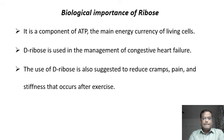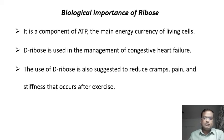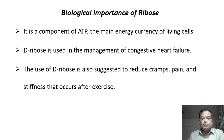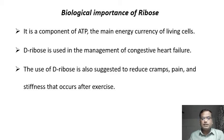D-ribose is used clinically in the management of congestive heart failure, and it is also used to reduce cramps, pain, and stiffness that occur after exercise. Simple sugars like glucose, fructose, and ribose therefore have many important biological roles and clinical applications.